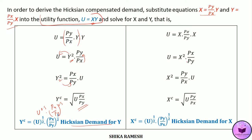Similarly we can find the Hicksian demand for good x by substituting in the place of y. We get u equals x times Px by Py times x, which gives u equals x squared times Px by Py. Bringing x squared to the LHS gives x squared equals Py by Px times u. Bringing the square to the RHS we get x equals the square root of u times Py by Px. This can also be written as x equals u raised to 0.5 times Py by Px raised to 0.5. This is the Hicksian demand for good x.